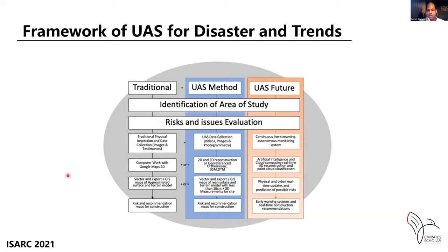For future trends, if we have drones with autonomous flying in the city, live streaming systems, and cloud computing combined with algorithms or artificial intelligence, we could process data in real time, update it to the cloud, and use BIM and GIS to reproduce scenarios. This would enable a real-time early warning system accessible via apps or other means for communities.